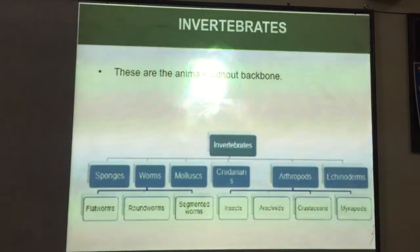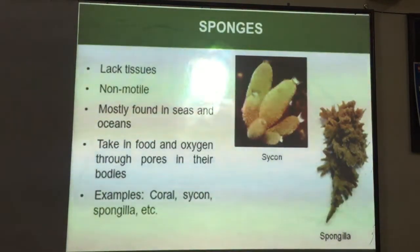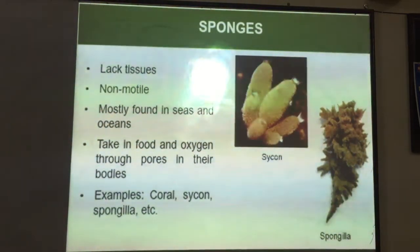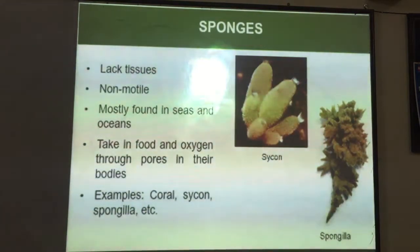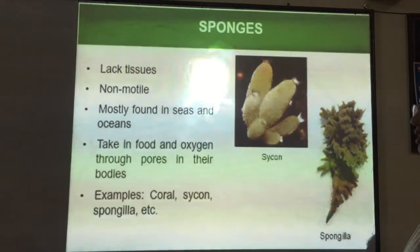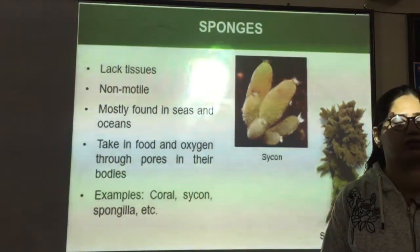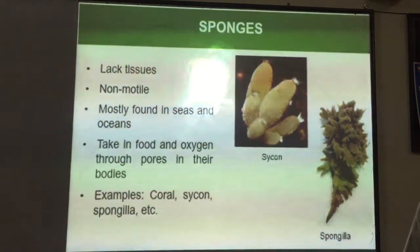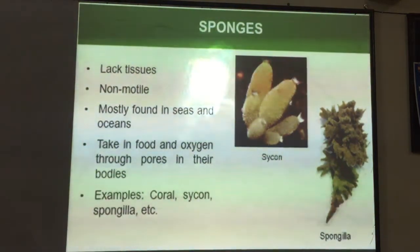The first type is sponges. Sponges are found in seas or oceans. They have a cell level of organization, meaning they do not have tissues — they have only cells to perform all body functions. They are not motile, meaning they cannot move from one place to another. They take food and oxygen through pores in their bodies. All animals are heterotrophic, meaning they cannot prepare their own food and depend on plants or other animals. Examples are coal, scypha, and spongia.